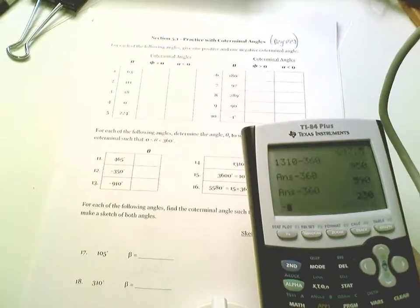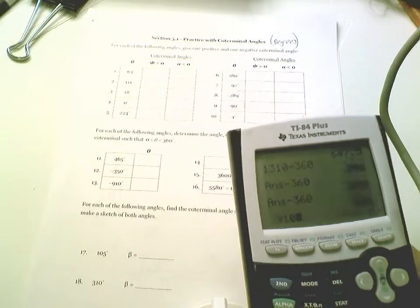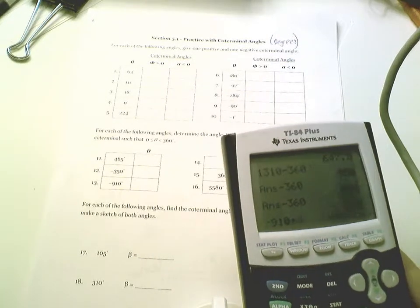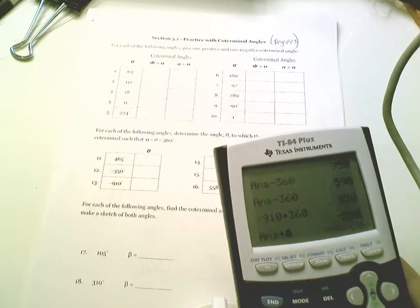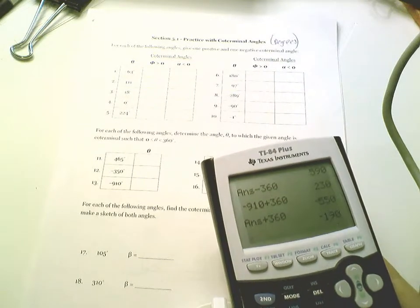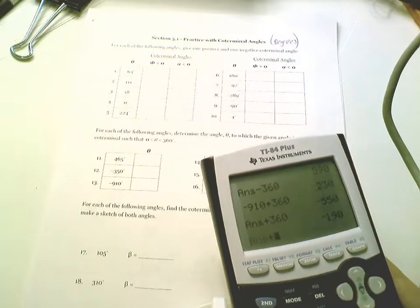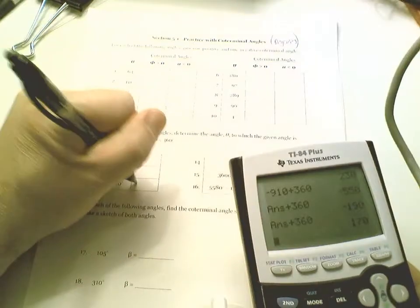Negative 910. In this case, I want to get a positive angle. I need to start adding. Add 360, negative 550. Do it again, negative 190. Still not good enough. Do it one more time. Good enough, 170 degrees.